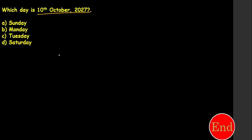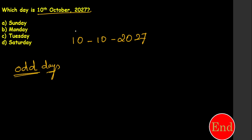This is a calendar question. They give a date and we need to find the day. So for October 10, 2027, we need to find what day it was. The method is to find odd days for the day, month, and year — that is the core concept.